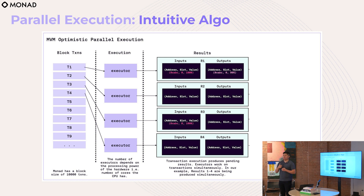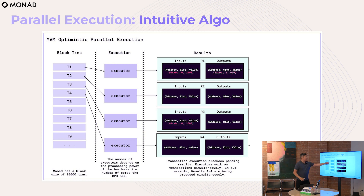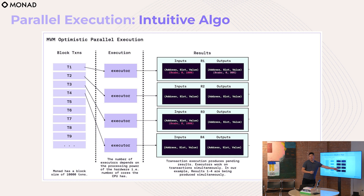Here's a simple example. Prior to transaction one, I have a thousand USDC in my account balance — that slot has a thousand in it. In transaction one I send five USDC to Canal. Transaction two is some unrelated transaction — someone else is minting an NFT. Transaction three, I send 10 USDC to Danny. With parallel execution, we do all three simultaneously. Transaction one has that slot as an input of a thousand, output of 995. Transaction three starts with an input of a thousand and an output of 990.